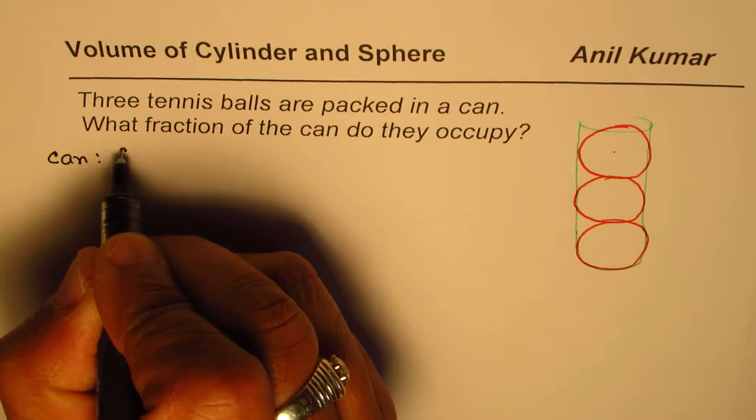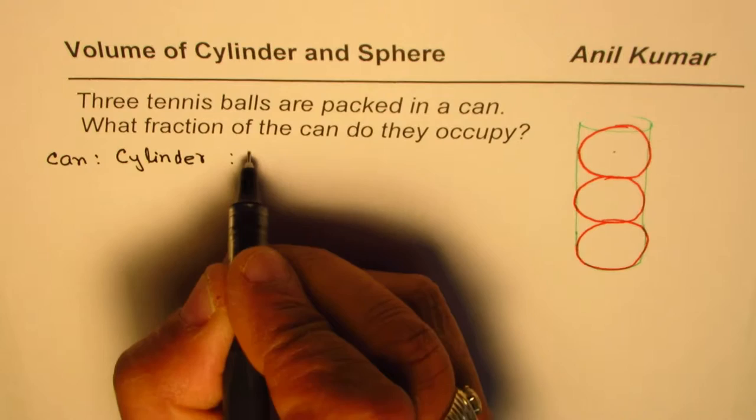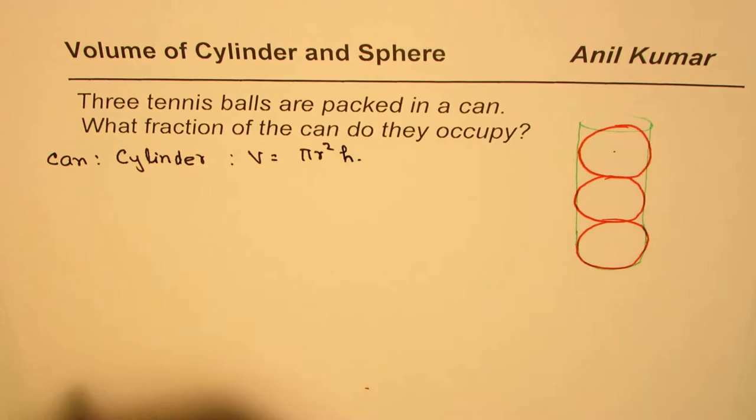For the cylinder, the formula for volume is πr²h.